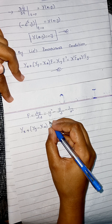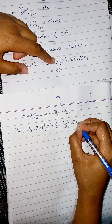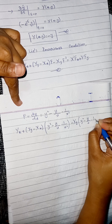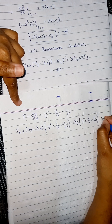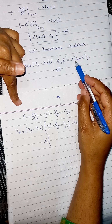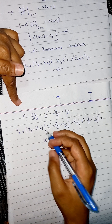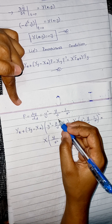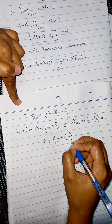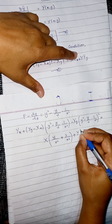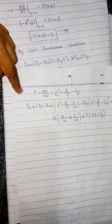Substituting, we get: η_x plus η_y minus ξ_x times capital F, where capital F is y squared minus y over x minus 1 over x squared, minus ξ_y times F squared, equals ξ times F_x plus η times F_y. The partial derivative of F with respect to x gives y over x squared plus 2 over x cubed, and the partial derivative of F with respect to y gives 2y minus 1 over x.